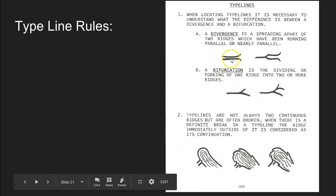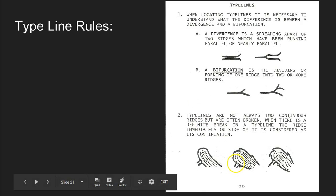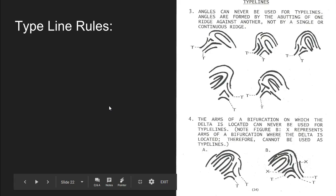Bifurcations aren't type lines. Type lines are when we have ridges that are traveling parallel to each other and then spread apart or diverge, so it's important to understand the difference between a bifurcation and a divergence. Also importantly, type lines are not always two continuous ridges — sometimes they can be broken. When there's a definite break in the type line, the ridge immediately outside of it is considered its continuation.